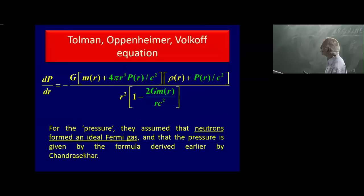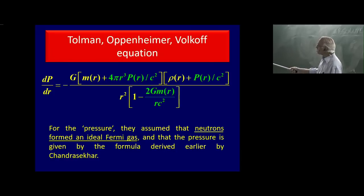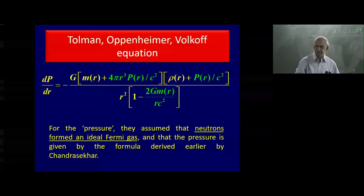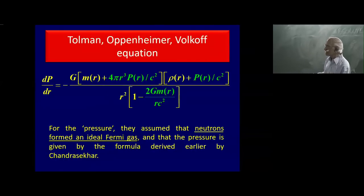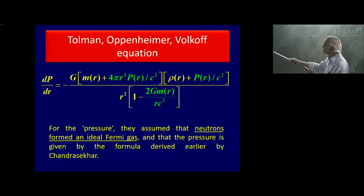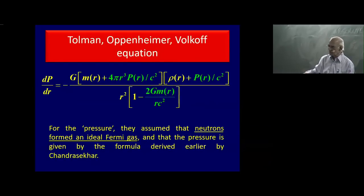So what Oppenheimer told young Volkov is: take this equation for the pressure. Instead of the pressure of electrons that Chandrasekhar used, use the degeneracy pressure of the Fermi gas of neutrons — the same formula, pressure proportional to density to the power 5/3, but with the mass of the neutron in the denominator. Do an exact calculation without any approximation. Volkov did that within a year — not easy in days without computers or electric calculators.